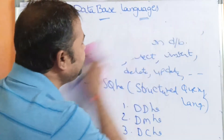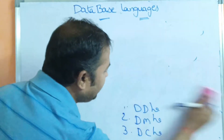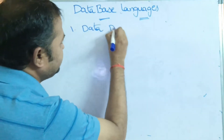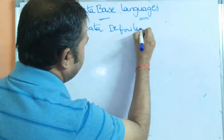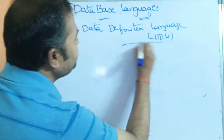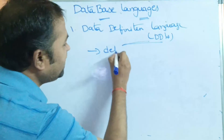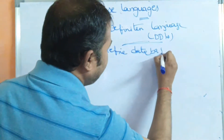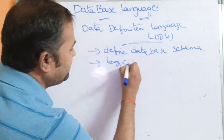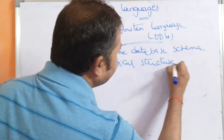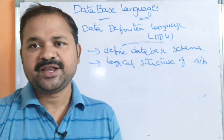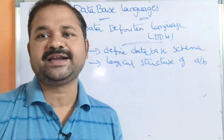First, let us see about DDL. DDL stands for Data Definition Language. It is mainly useful in order to define the database schema. Database schema is nothing but providing the logical structure of the database. This Data Definition Language is used to define that logical structure.